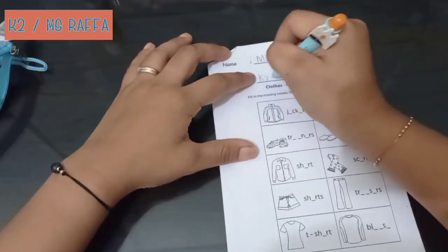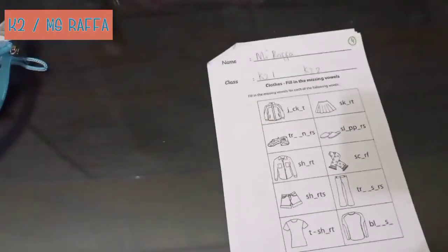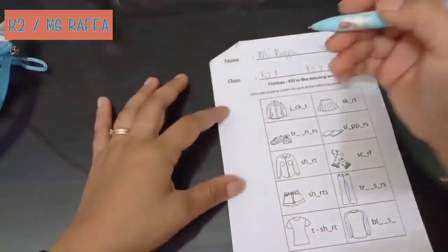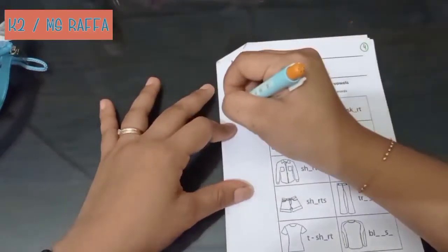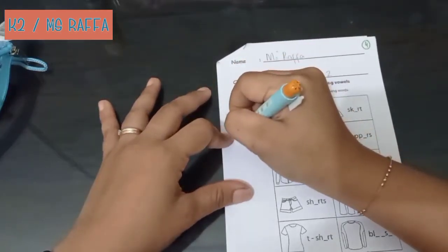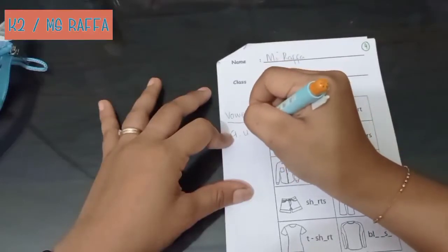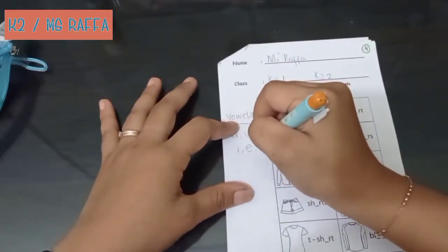And your class, K2.1 for B1, K2.2 for B2. Okay, now we will study about vowels again. It's fill in missing vowels. Vowels. You know the vowels? This is vowels.